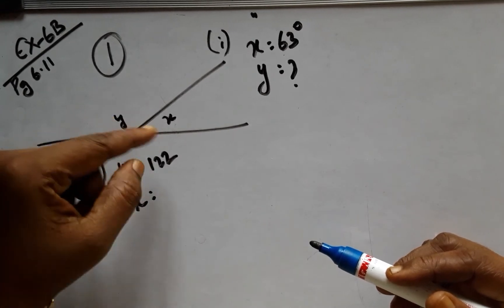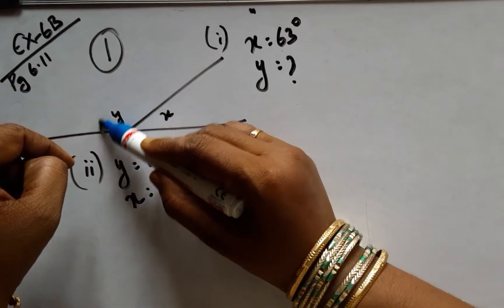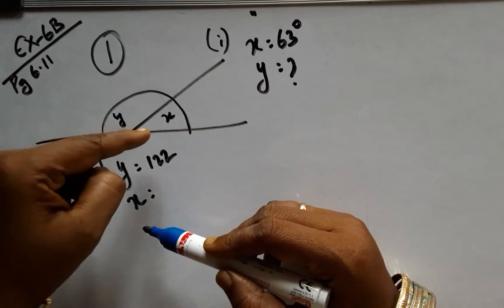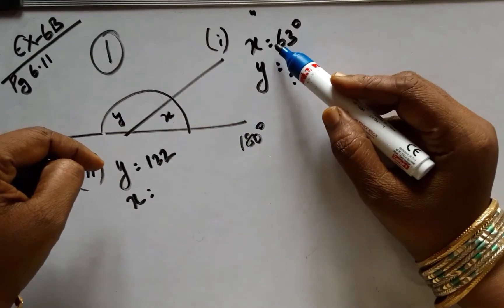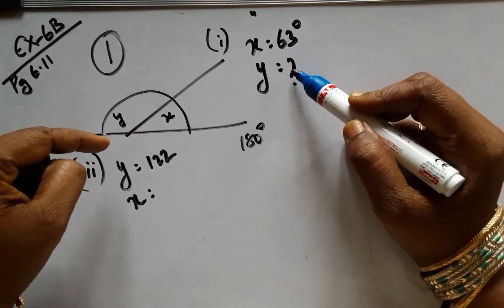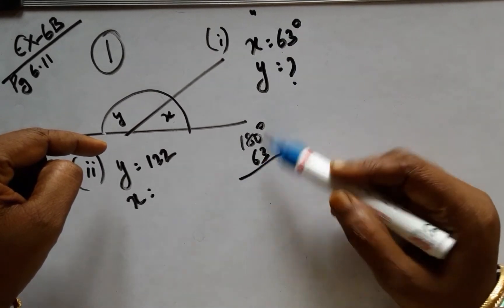Here x and y form a linear pair because the sum of angles, supplementary angles, is 180 degrees. Now one of the angles is 63, its supplement will be 180 minus 63.